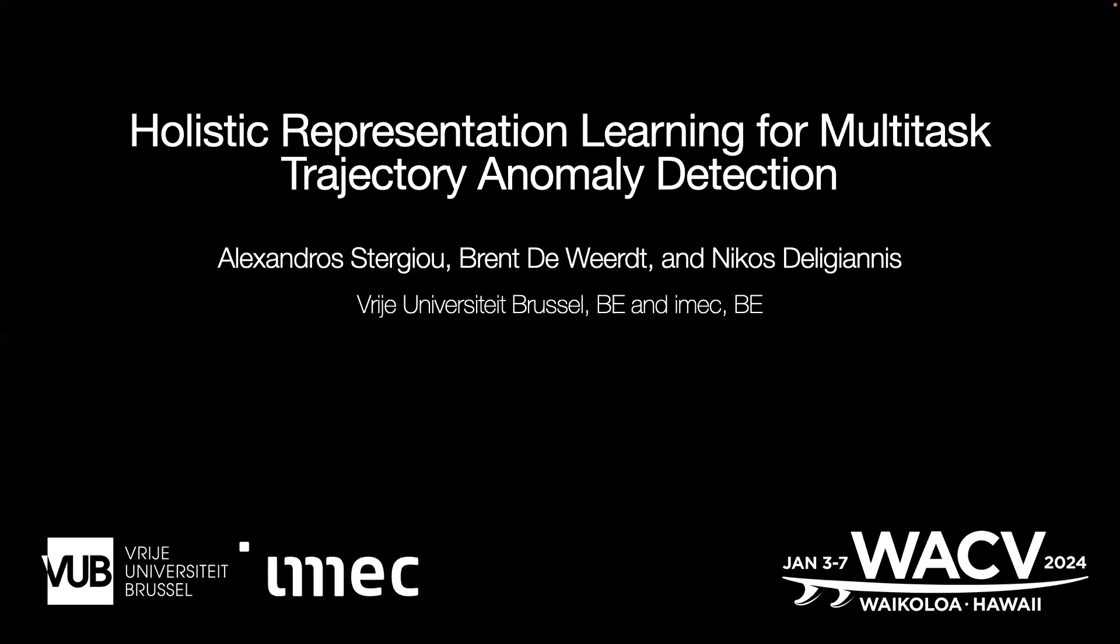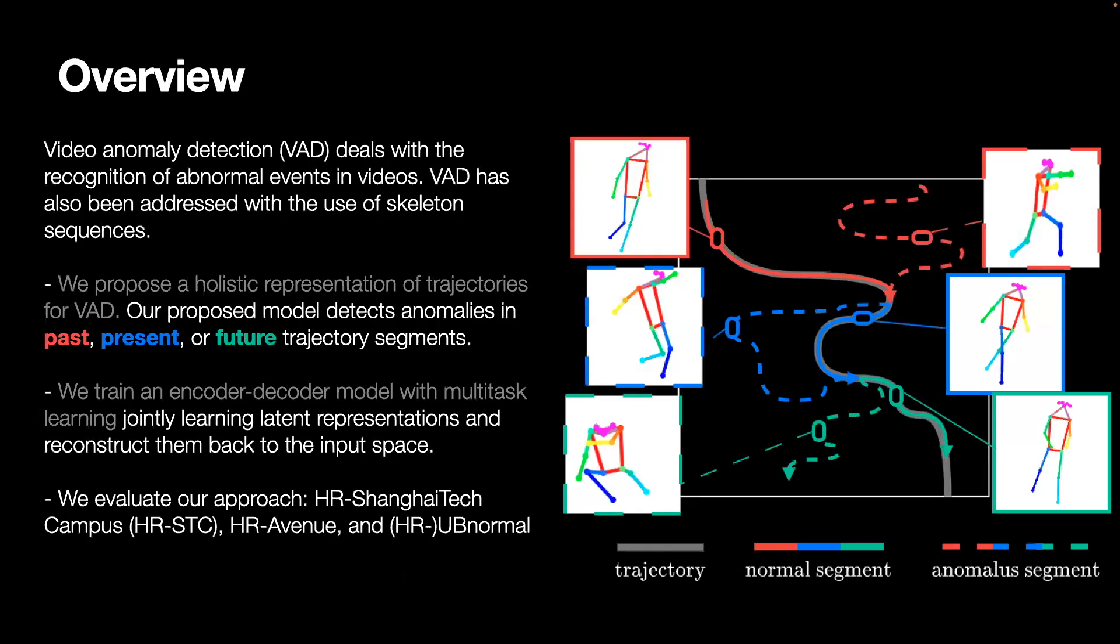Holistic representation learning from both tasks: trajectory anomaly detection. Video anomaly detection deals with the recognition of anomalous events in videos. Video anomaly detection has also been addressed with the use of skeleton sequences.